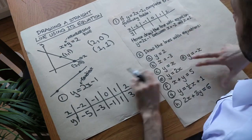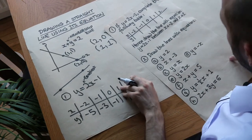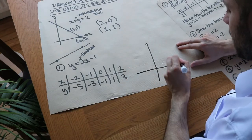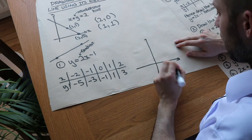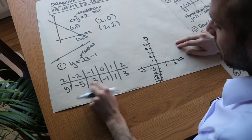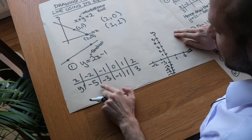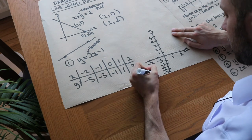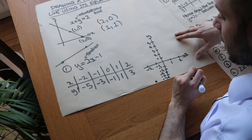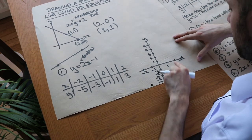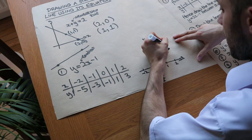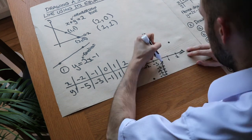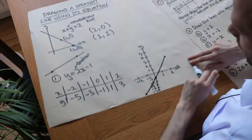Now draw the line with equation y = 2x − 1 between x = −2 and x = 2. You would usually have some axes. Remember, if it's a straight line you only really need two points. So we plot (−2, −5) down here, and then (2, 3) here, and then we join them up with a straight line using a ruler.